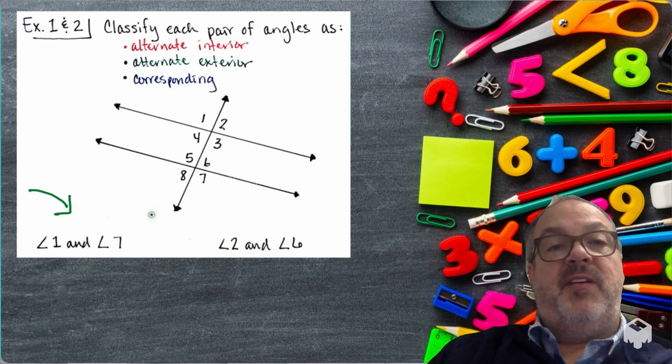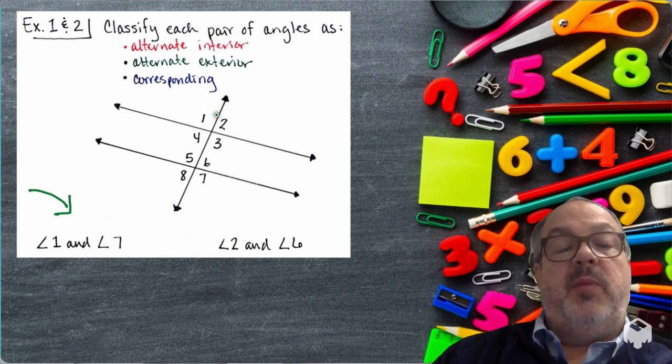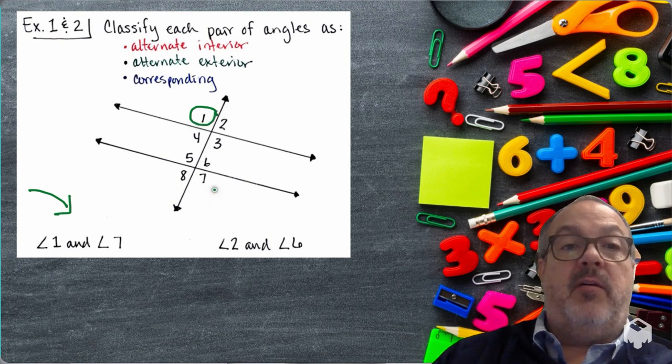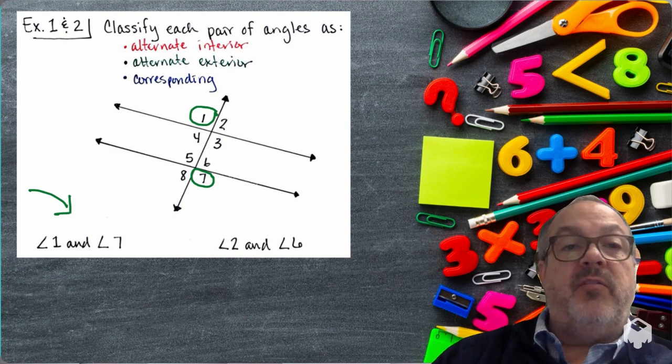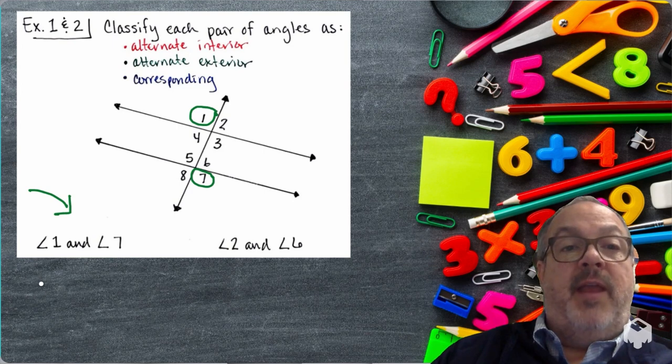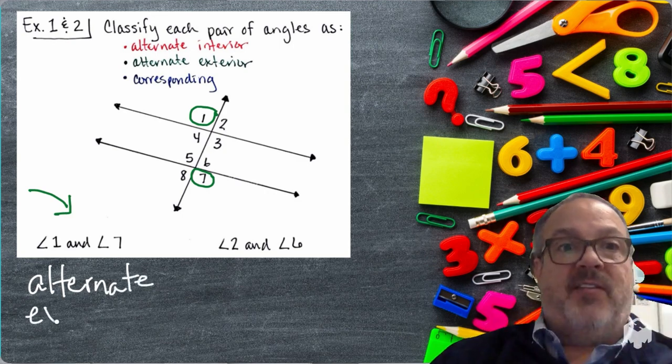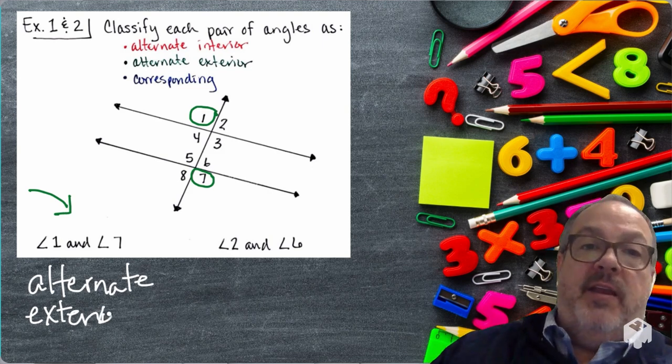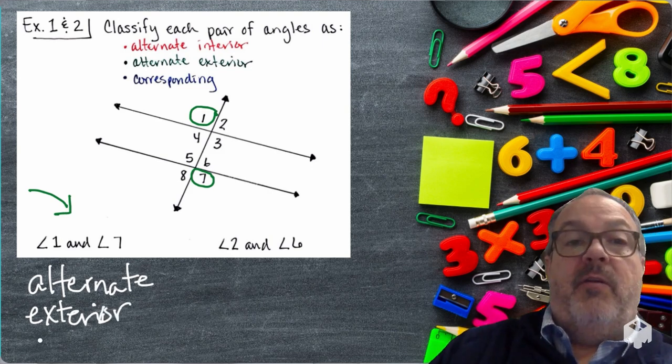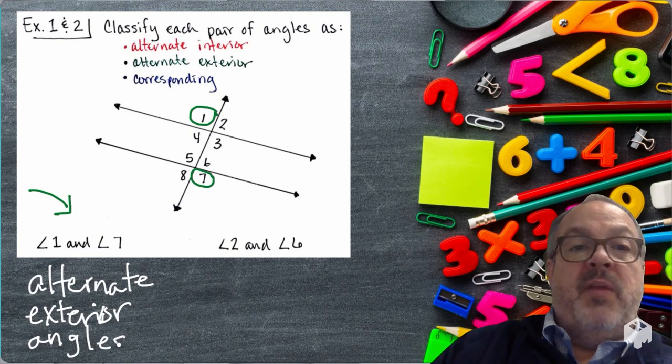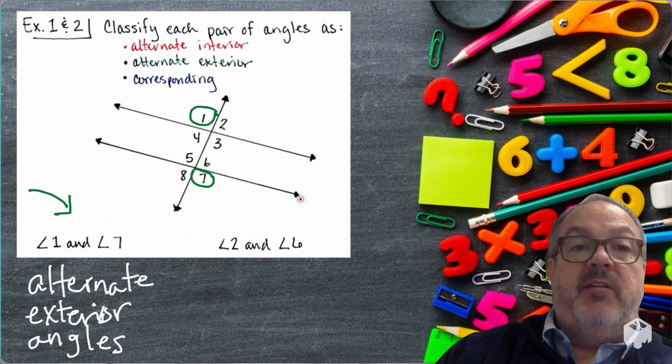Okay, so in this example we've got this transversal that's cutting between two lines, forming these eight angles. And we're trying to find out what types of angles some of them are. First we're looking at Angle 1 and Angle 7. They're on alternate sides of the transversal, on opposite sides. That's an important piece. And they're outside of the two lines, so they're exterior angles. So we can say that Angle 1 and 7 are alternate exterior angles.